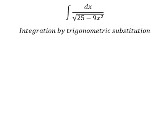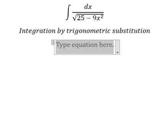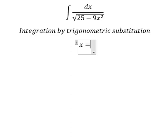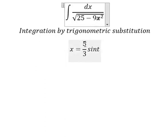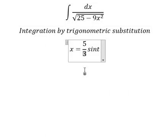I will put x equals 5/3 sin t because if I put this one here, we have 25 over 9 sin² t. Number 9 and number 9 we cancel, 25 and 25...